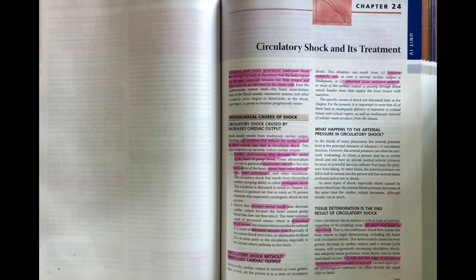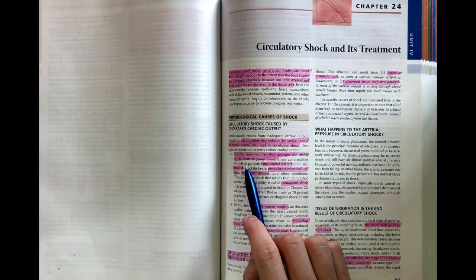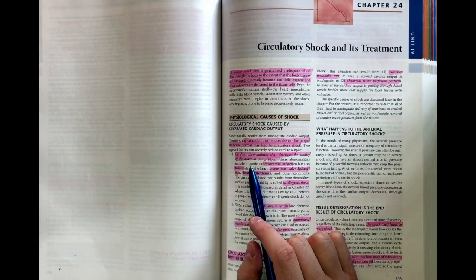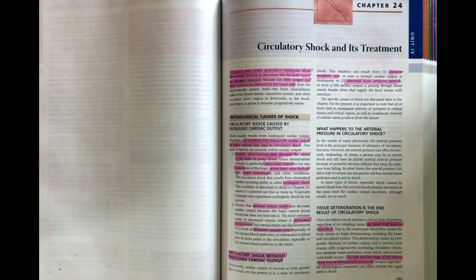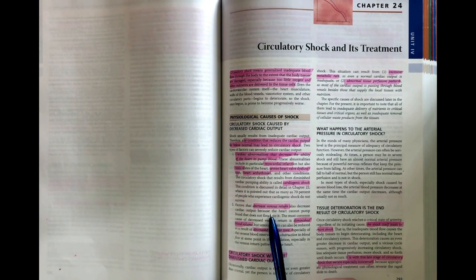Circulatory shock can occur for two main reasons. One, because the heart is unable to pump the blood around the body, so the pump is defective. Or two, there is poor venous return, so something is stopping that blood from returning back to the heart to then get pumped around the body.